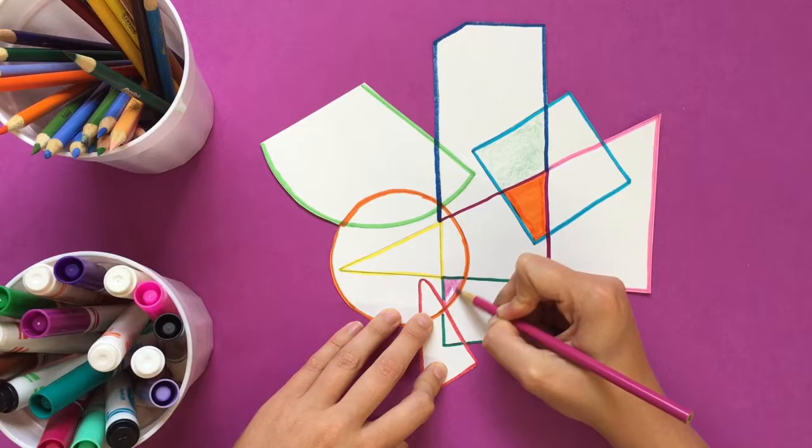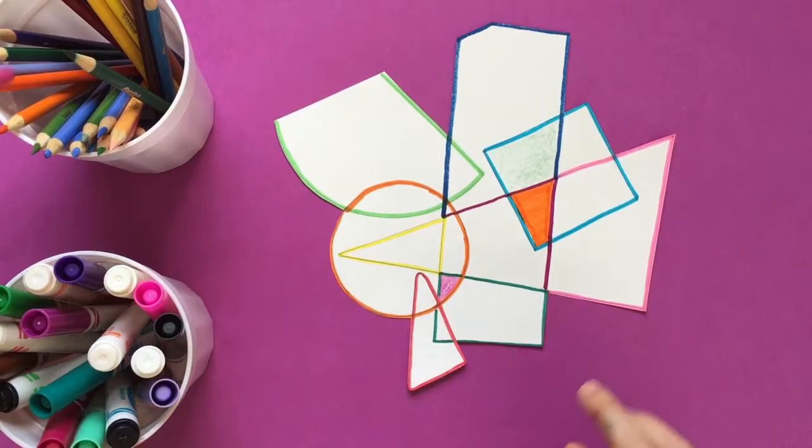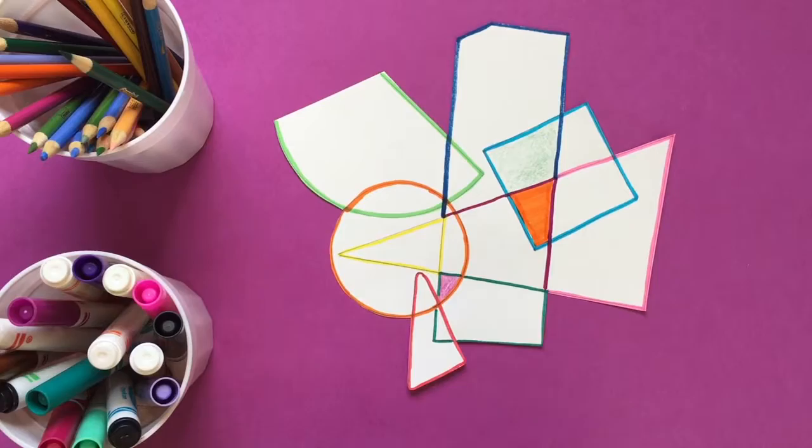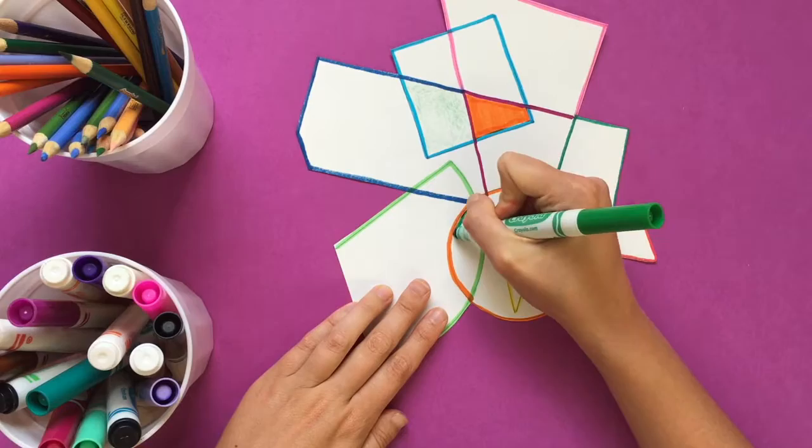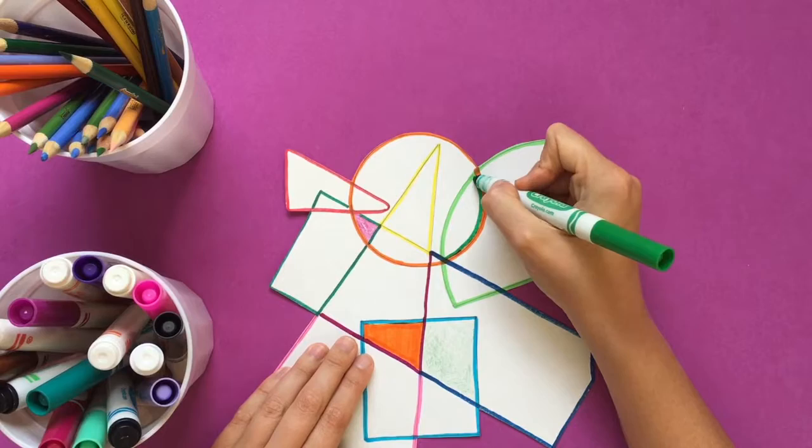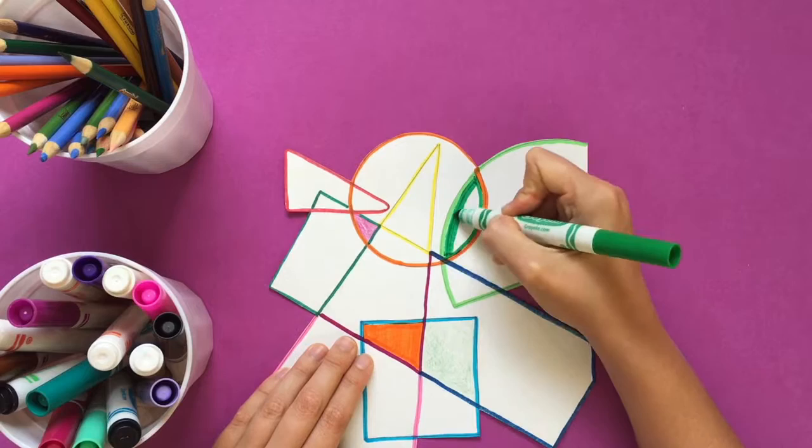You are going to get to decide which shapes you color in and which shapes you leave empty. A shape that's colored in is called positive space. So right now I am creating positive space by coloring in this shape. And shapes that you choose to leave empty, those are called negative space.